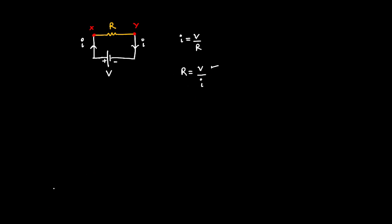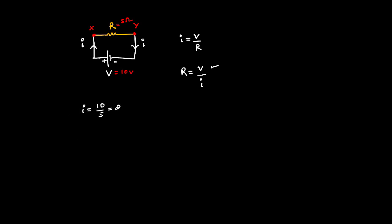Let's give some numbers to make it easier to grasp. Let's say this resistance is 5 ohms and the supply voltage is 10 volts. In that case, I is going to be 10/5, which is 2 amps of current flowing through the circuit. This is easy to understand.